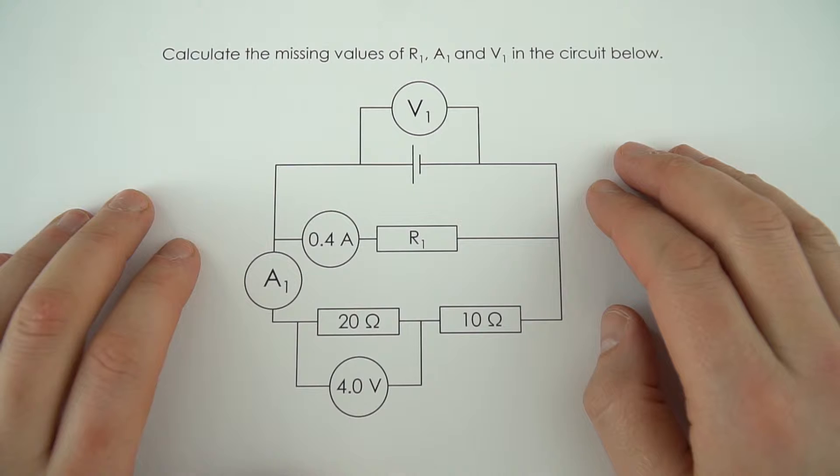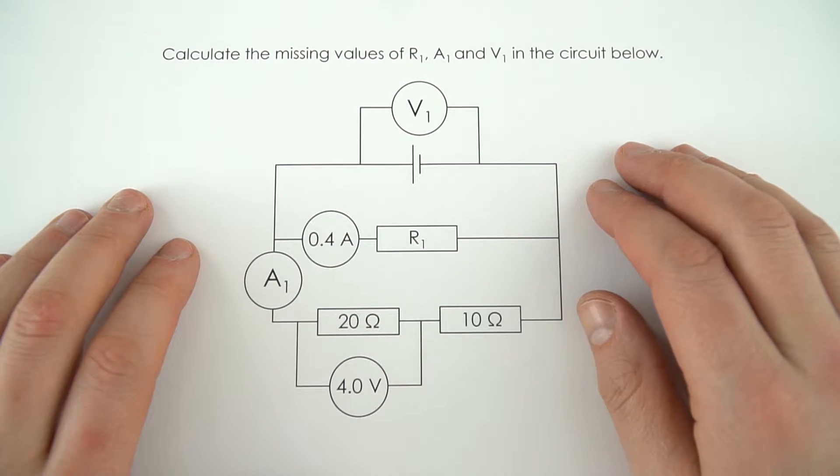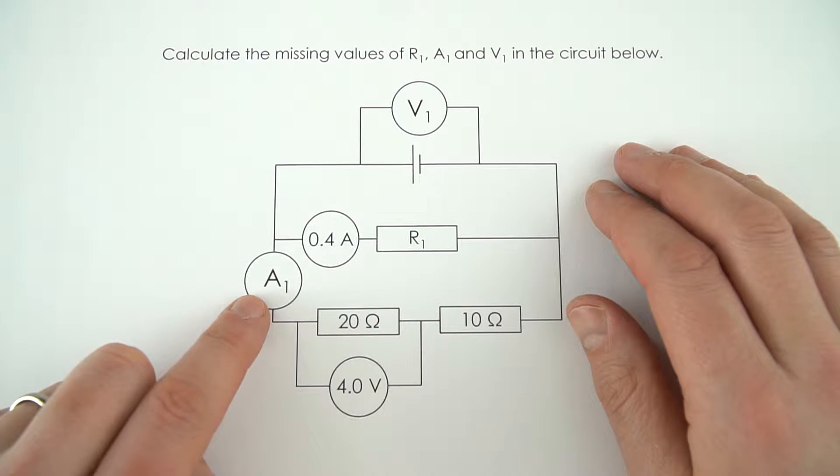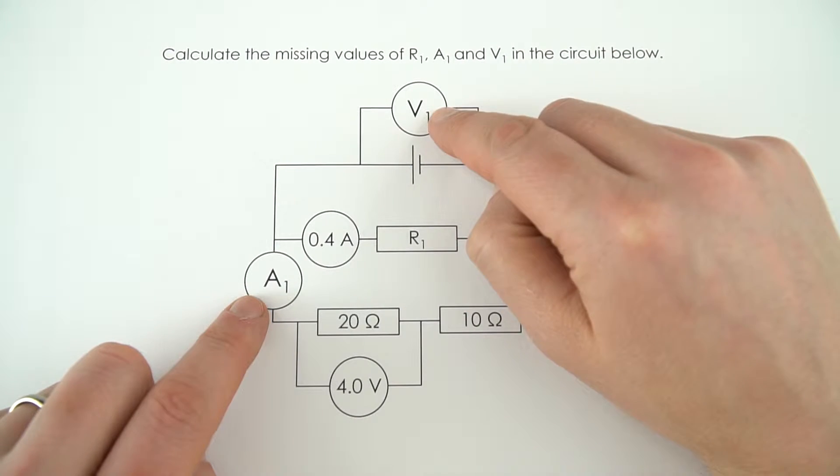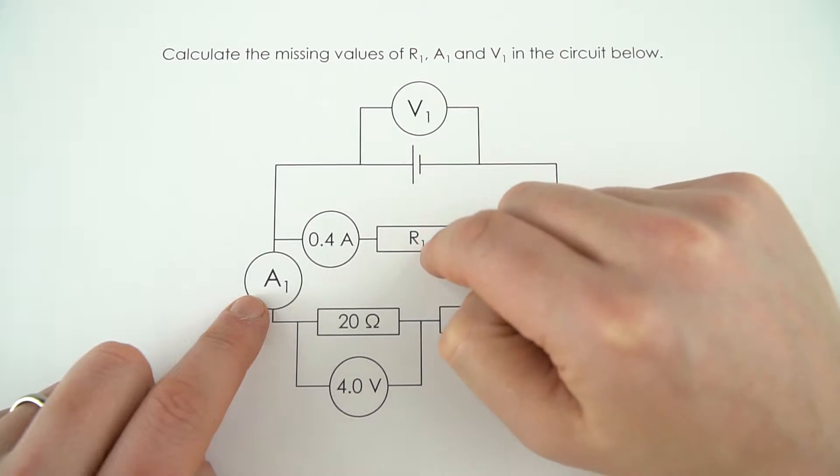There's a lot going on in this circuit and we need to work out the missing values for the current here at ammeter 1, the potential difference across the cell which is V1, and also the resistance of this resistor R1.